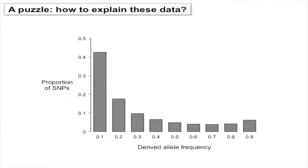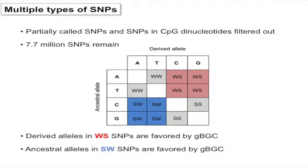Looking at the data, I saw something really puzzling. This plot shows the proportion of SNPs that have a particular allele frequency — specifically derived allele frequency. A derived allele is a new mutation in our lineage, while an ancestral allele is the one we share with chimps. Most alleles tend to be low-frequency derived alleles, as expected. But something fishy was going on at the high end. The trick was figuring out what was going on there — massive positive selection? A strange demographic scenario? But I was seeing this across every population, which hints it probably isn't demography. It turns out it can be explained at least partially by biased gene conversion.